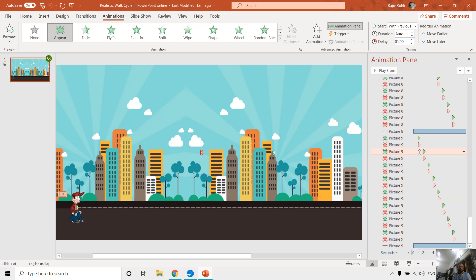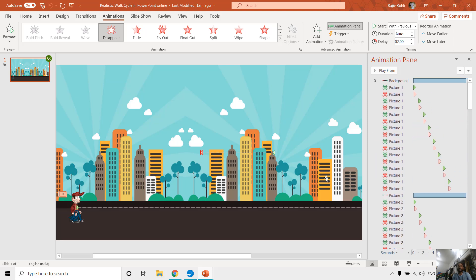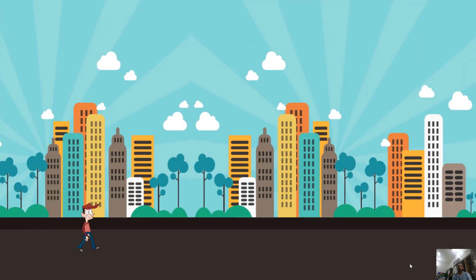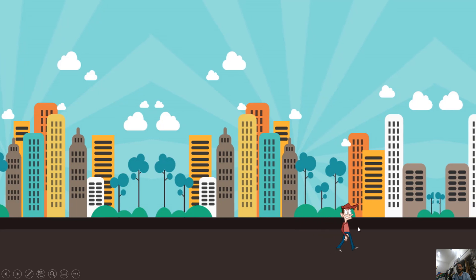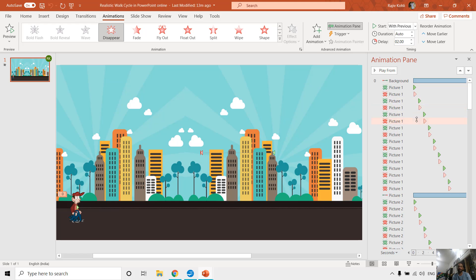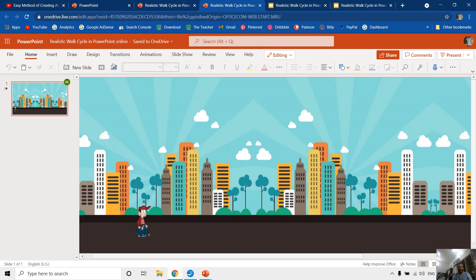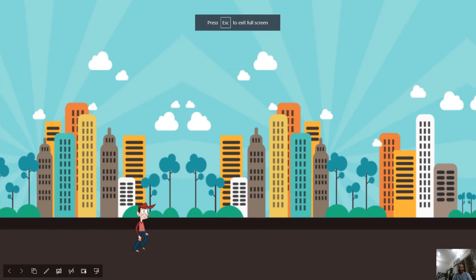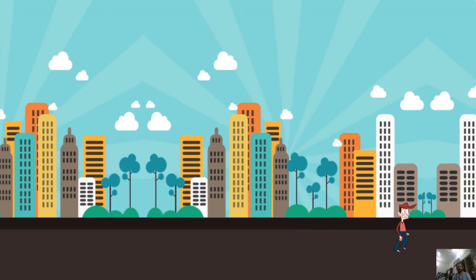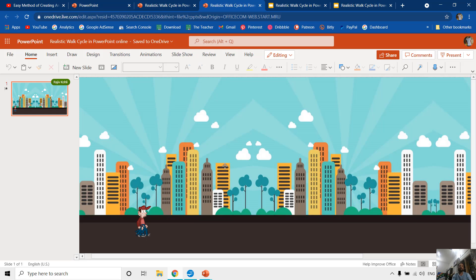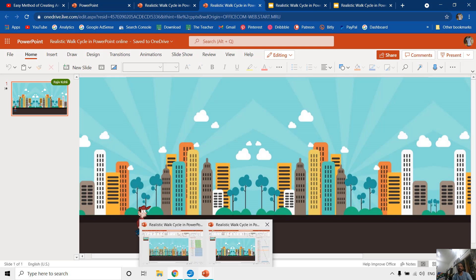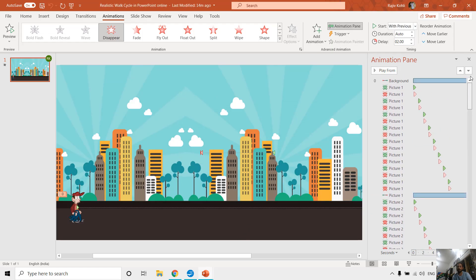You have to take care of the delay timing very carefully if you don't want to miss any steps. Here you can see the walk cycle animation I created using the appear and disappear animation effects instead of Flash Once. There is a little glitch, which might be because of the delay timing. But if we open the same presentation in PowerPoint Live, you can see the same animation effect is working using appear and disappear. So we can use that effect, though it will be very hard to manage these kinds of animated presentations in live services.